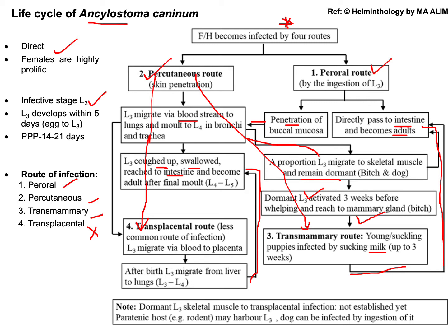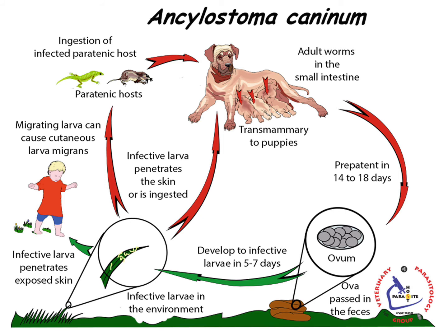In summary: this is a direct life cycle with the infective stage L3 and four routes of infection. The first is the paroral route; the second is percutaneous, which contributes to the transmammary and transplacental routes of infection. From the paroral route, some L3 also follow the percutaneous route of infection.